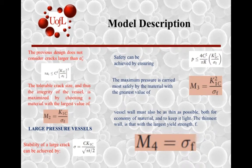So we need to come up with an equation that applies to those larger cracks, specifically for small pressure vessels. We end up with a material index that takes into account both the fracture toughness and the yield strength.